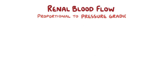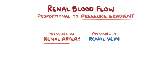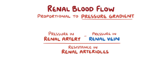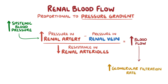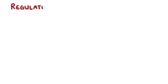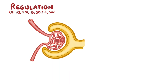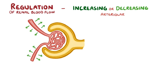Renal blood flow is proportional to the pressure gradient — the difference in pressure between the renal artery and the renal vein — divided by the resistance in the renal arterioles. So a high systemic blood pressure and a low resistance in the renal arterioles leads to a high renal blood flow and in turn a high glomerular filtration rate, and vice versa. Regulation of renal blood flow is mainly accomplished by increasing or decreasing arteriolar resistance.